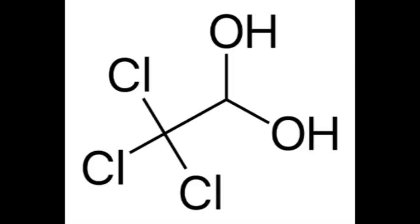Production: Chloral hydrate is produced from chlorine and ethanol in acidic solution. In basic conditions, the haloform reaction takes place and chloral hydrate is decomposed by hydrolysis to form chloroform.